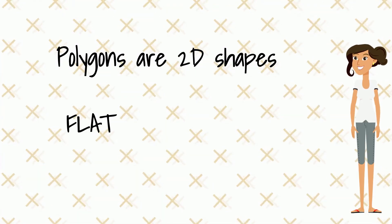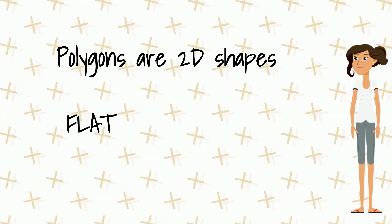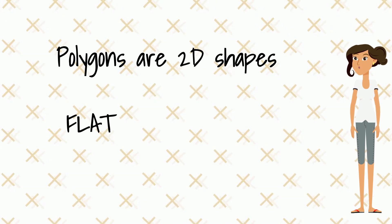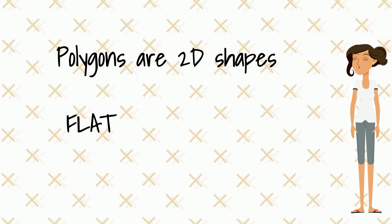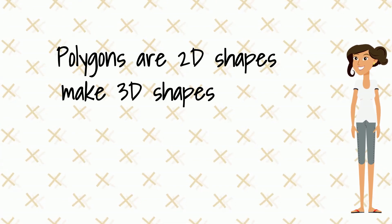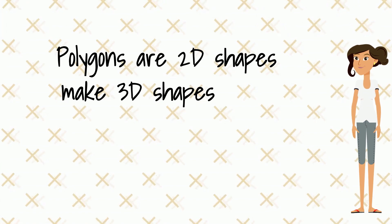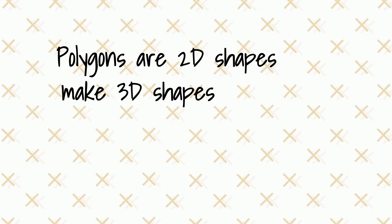The last important thing to consider is that polygons are two-dimensional shapes, which means they are flat. However, polygons can be used to make three-dimensional shapes — in fact, most three-dimensional shapes are made of polygons.